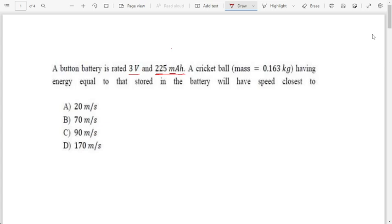Just like if you would have heard kilowatt hour, kWh, that means it can produce a power of kilowatt for one hour. Similarly, this is 225 milli ampere for an hour. So you know that power produced by the battery is VI, voltage into current.